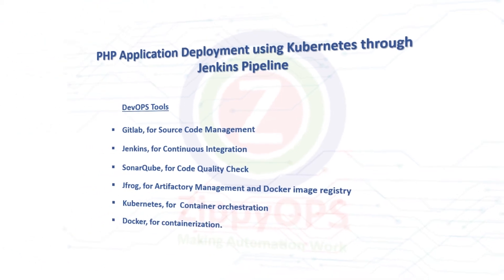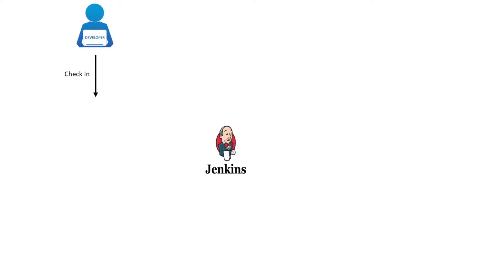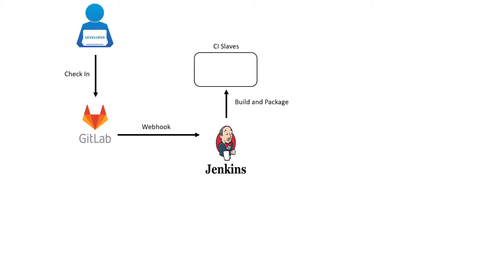Let's explore the workflow of PHP Application Deployment stage by stage. Jenkins' job will pull the PHP Application Source Code from GitLab. A webhook is configured on GitLab so that the ongoing deployment job will trigger automatically when a commit happens on a particular branch. In the next stage, the PHP Application Source Code will be built either in Jenkins' master or slaves. In case of any failures in the build step, the pipeline will be aborted. The deployment package will be archived on Jenkins for future use.